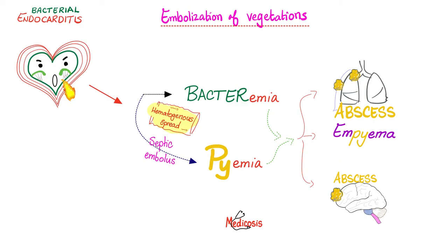If I have infective endocarditis, I will develop vegetations on my valves. Vegetations are made of the pathogen — such as bacteria or fungi — along with platelets and fibrin. These vegetations can damage my valve, not just the valve leaflets but the chordae tendineae as well, leading to murmur — usually a regurgitation murmur. This is similar to the damage of the chordae tendineae that happens post myocardial infarction, which also leads to a regurgitation murmur such as mitral regurgitation.